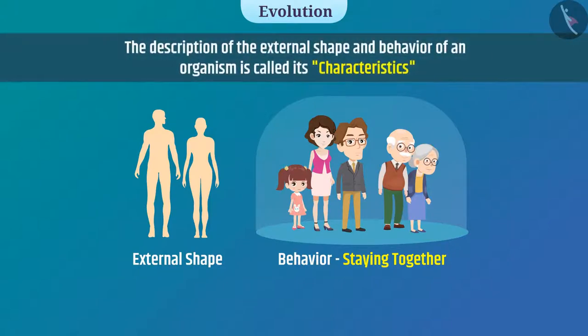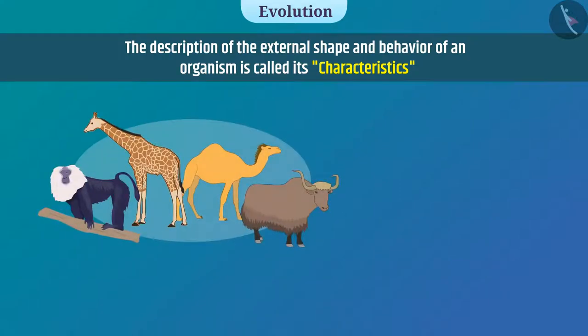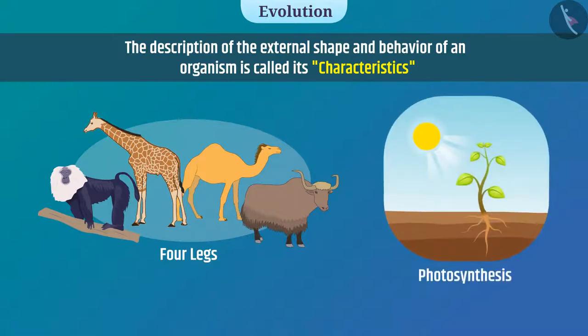The description of the external shape and behavior of an organism is called its characteristics. For example, different organisms have four legs. It is a characteristic. Plants can do photosynthesis. It is also a characteristic.